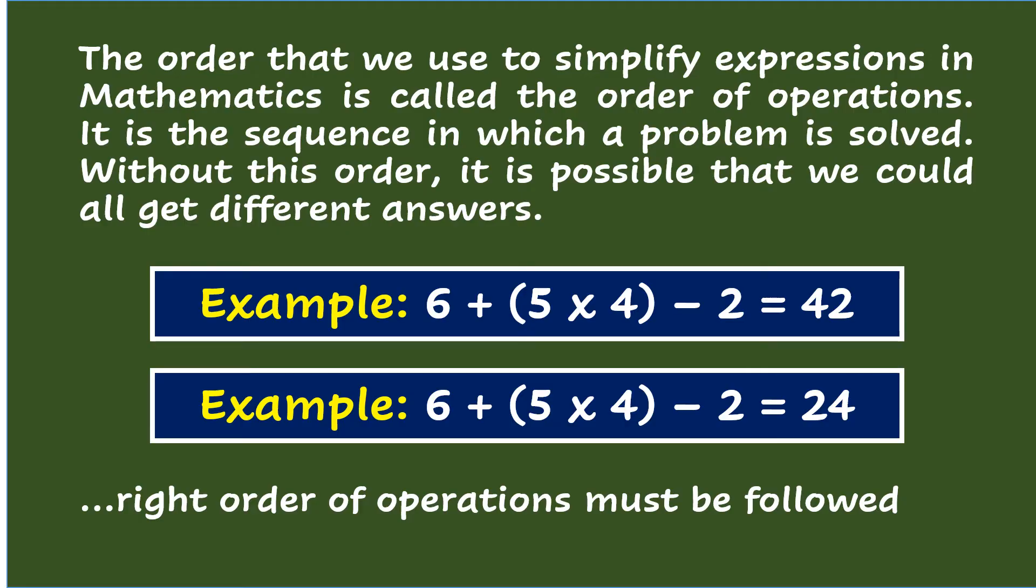In the second example, if we were to start with the numbers inside the parenthesis, followed by the numbers outside the parenthesis, that would be 5 times 4 equals 20. So 6 plus 20 equals 26, minus 2 equals 24. That's why it is necessary that right order of operations must be followed.